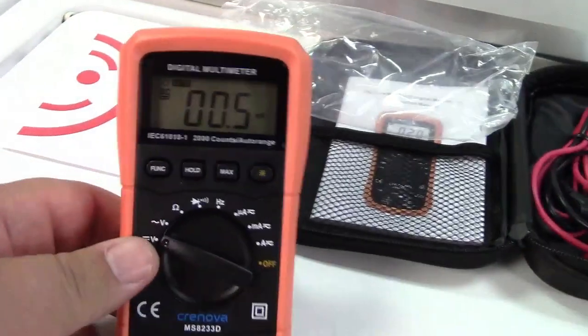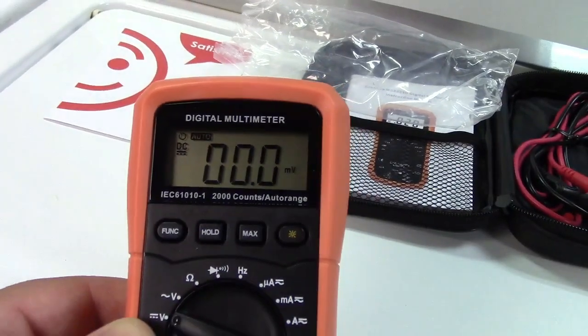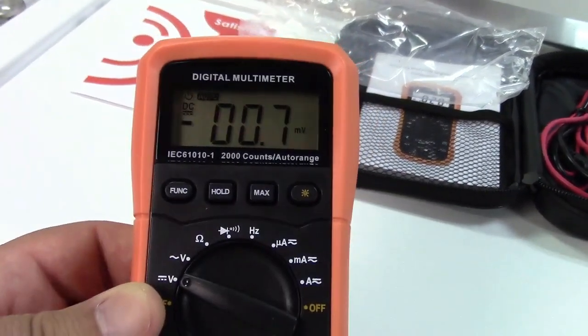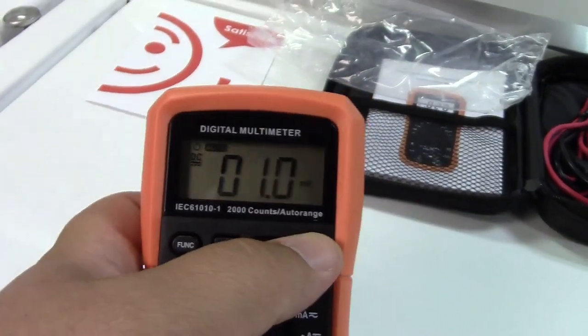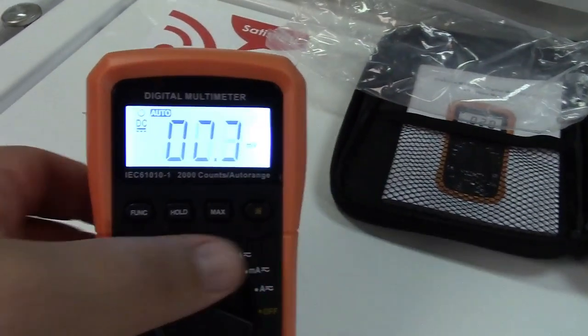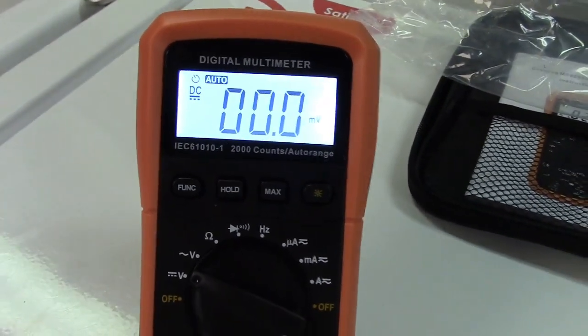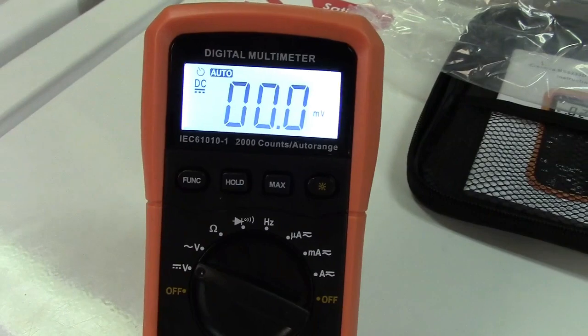And there is our zero reading. The display is quite readable. Of course the display is going to jump around a bit, that's completely normal with a very sensitive meter. The display is also backlit, and the camera can actually see it a lot better with that on. It's perfectly readable either way in this lighting.